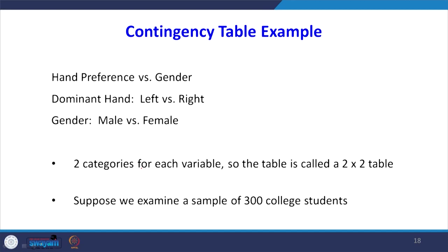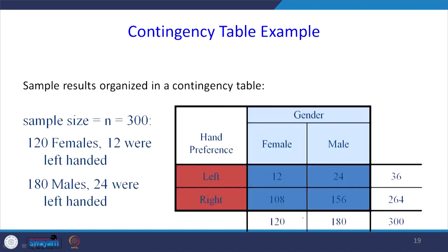Here is another example comparing hand preference versus gender. The dominant hand may be left or right, and the gender is male or female. Our hypothesis is whether there is any connection or dependency between gender and dominant hand. This is a 2×2 table. We examined a sample of 300 college students. In rows we have dominant hand — left or right — and in columns we have gender — female and male.